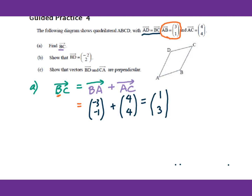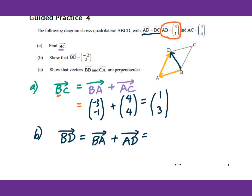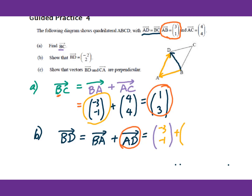For part B, show that vector BD equals (negative 2, 2). Vector BD equals vector BA plus vector AD. According to the given information, vector AD equals vector BC. So we have BA equals (negative 3, negative 1) plus AD which equals BC equals (1, 3). Adding together: negative 3 plus 1 equals negative 2, negative 1 plus 3 equals 2. So vector BD equals (negative 2, 2). Proof complete.